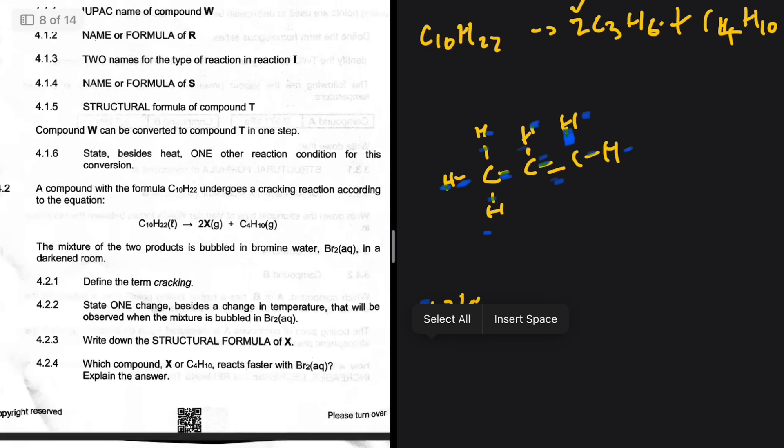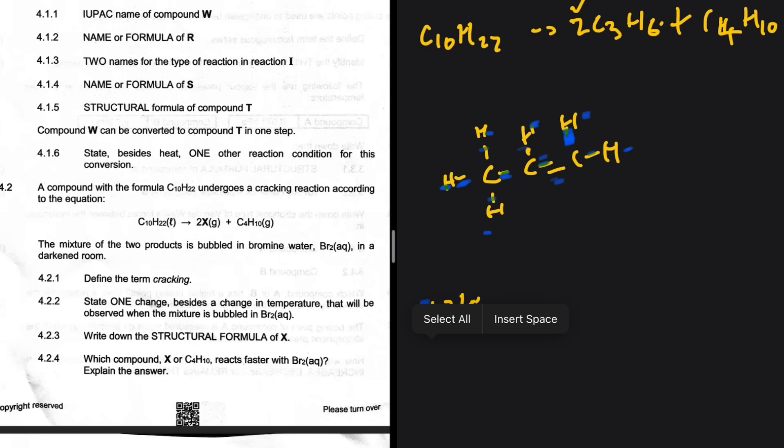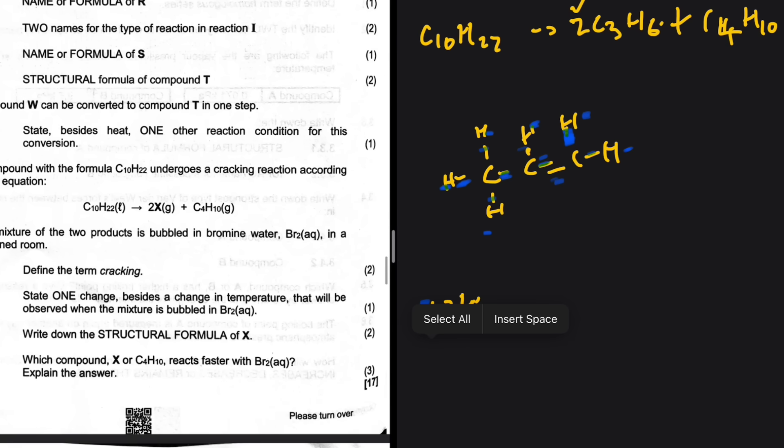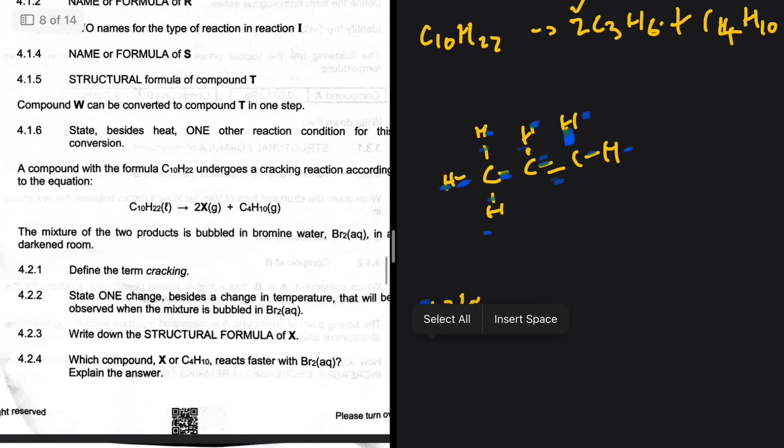4.2.4, which component, X or C4H10, reacts faster with Br2? Explain the answer. This is the last cliché, so you know how we roll. You guys have to tell me the answer in the comment section. What is your answer to 4.2.4? Is it X or is it C4H10 that reacts faster with Br2? Why do you say so? Let me know in the comments.